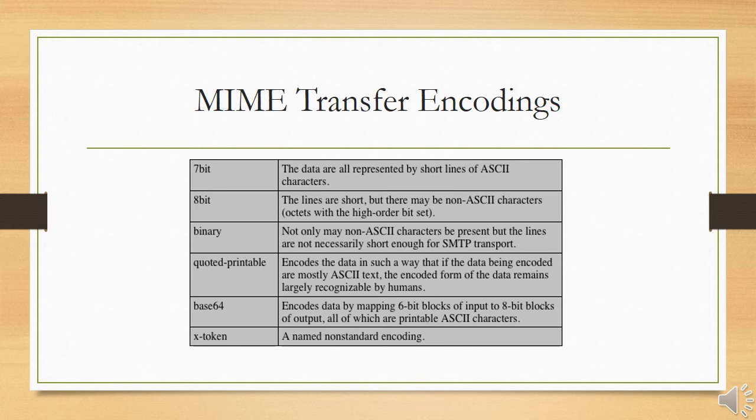However, three of these values—7 bit, 8 bit, and binary—indicate that no encoding has been done but provide some information about the nature of the data. For SMTP transfer, it is safe to use the 7 bit form. The 8 bit and binary forms may be usable in other mail transport contexts.